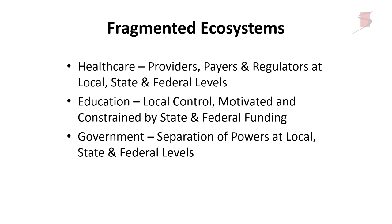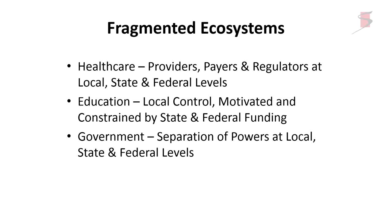The point is it's really a system — it's not straightforward — and it's really complicated by the problem of fragmentation. We have three great examples of fragmentation in the US: healthcare, with providers, payers, and regulators at local, state, and federal levels; education with local control but constrained by state and federal resources; and government with separation of powers at multiple levels. These are very fragmented systems and it's hard for them to work well.